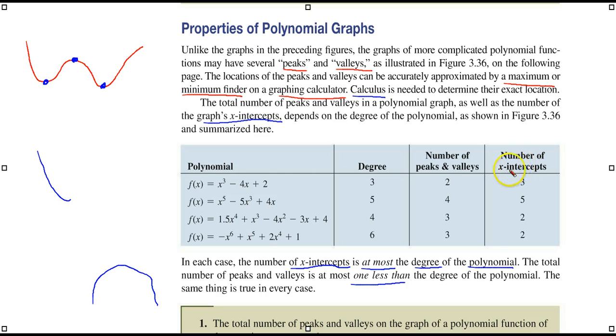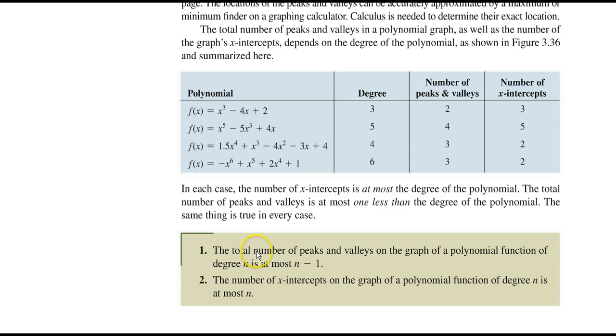Also, the number of x-intercepts may be equal or fewer than the degree of the polynomial. The total number of peaks and valleys of the graph of a polynomial function of degree n is at most n minus 1. And the number of x-intercepts of the graph of a polynomial function of the degree n is at most, that is, it could be equal to it, but it could be fewer.